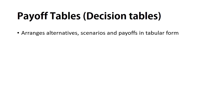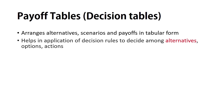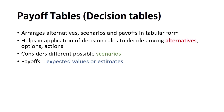One method to arrange alternatives and scenarios in a meaningful manner is using payoff tables. Payoff tables arrange alternatives, scenarios, and resulting payoffs in a tabular form. Such arrangement helps decision makers easily decide among different alternatives by considering different scenarios and resulting payoffs, whereas payoffs are simply expected values or estimates made using the available information.